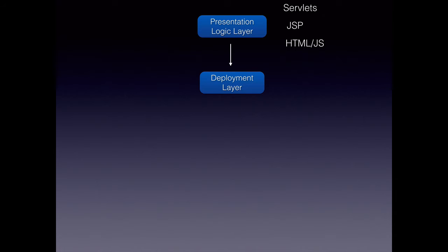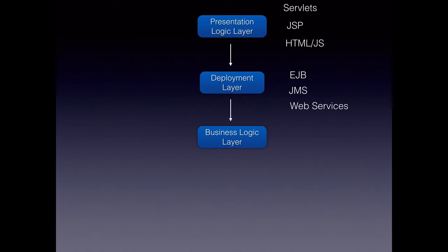The next layer is the deployment layer. This layer typically comprises EJBs, which at one point were very famous, and JMS (Java Messaging Services), which can be used to expose the services provided by the business logic layer to other components within our application, as well as to our UI or an entirely different application running on a different platform altogether, using technologies like web services.